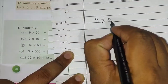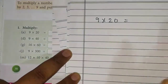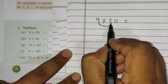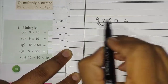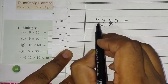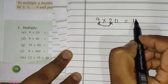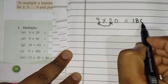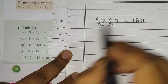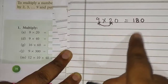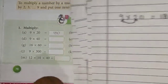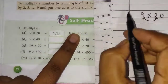9 × 20 — this is how we find our answer. When we do this, we take 9 × 2, which means we read 9 two times: 9 × 1 = 9, 9 × 2 = 18. Then we have one zero, so we place one zero. So the multiplication 9 × 20 gives us the answer 180, which is correct.